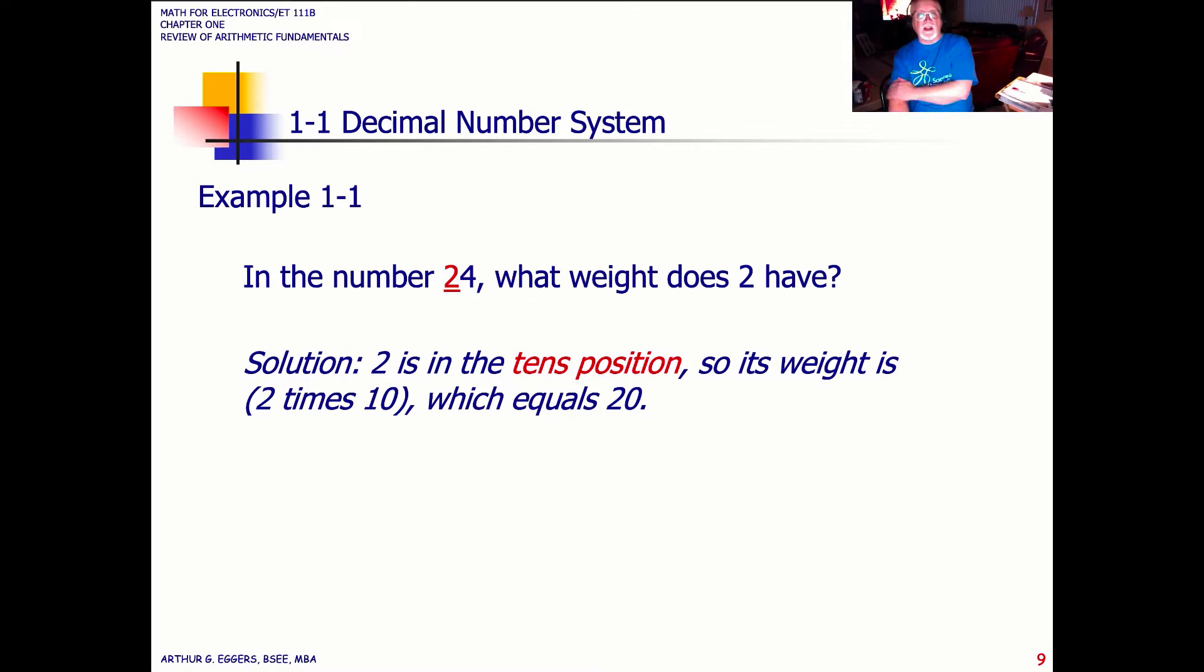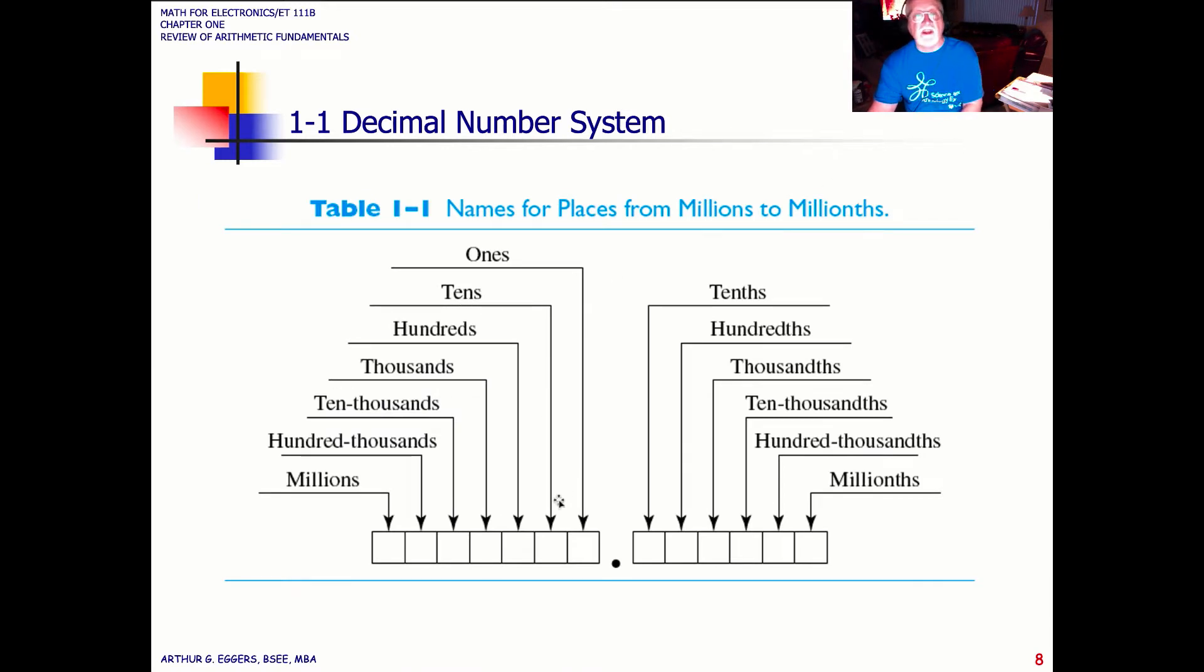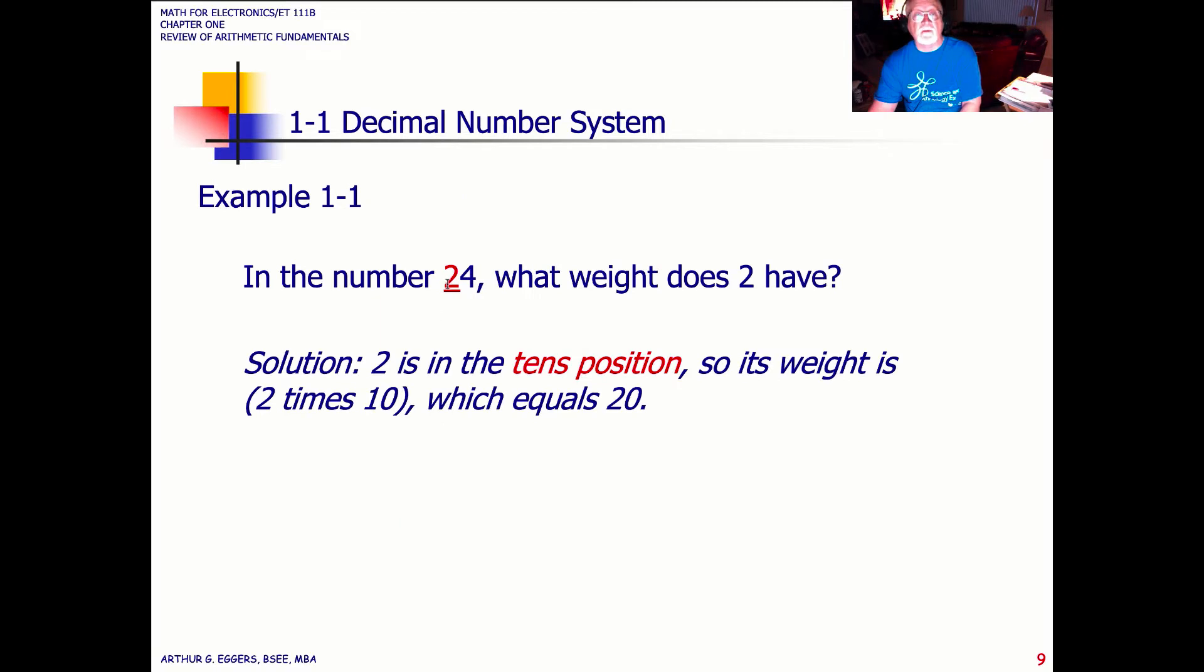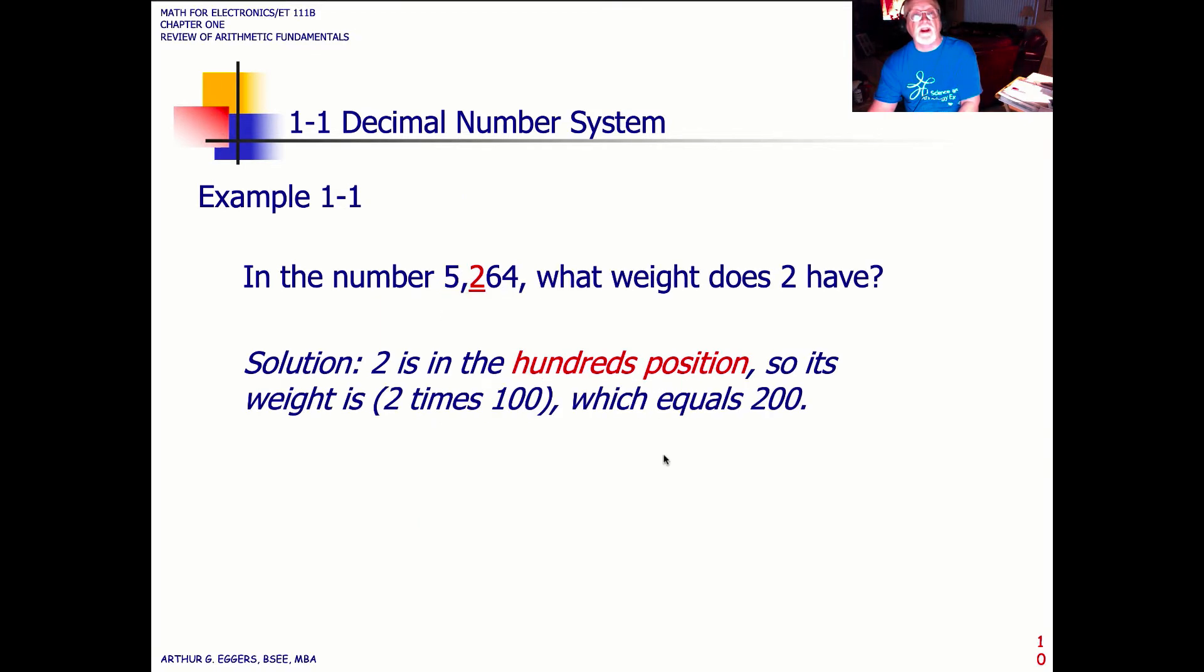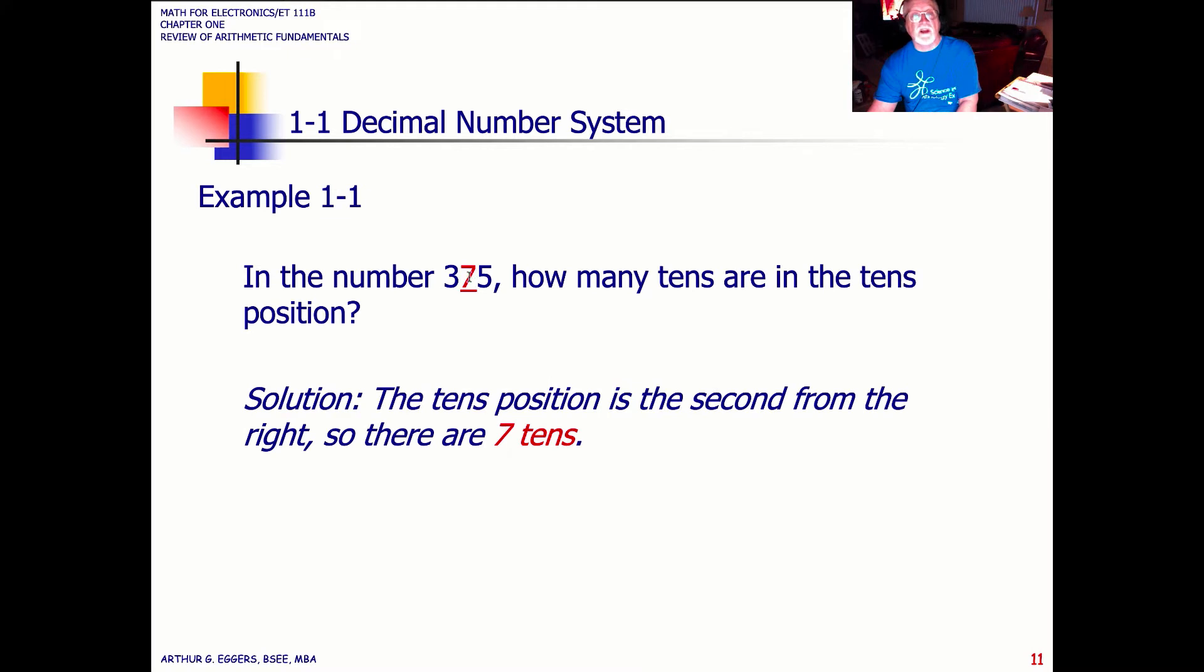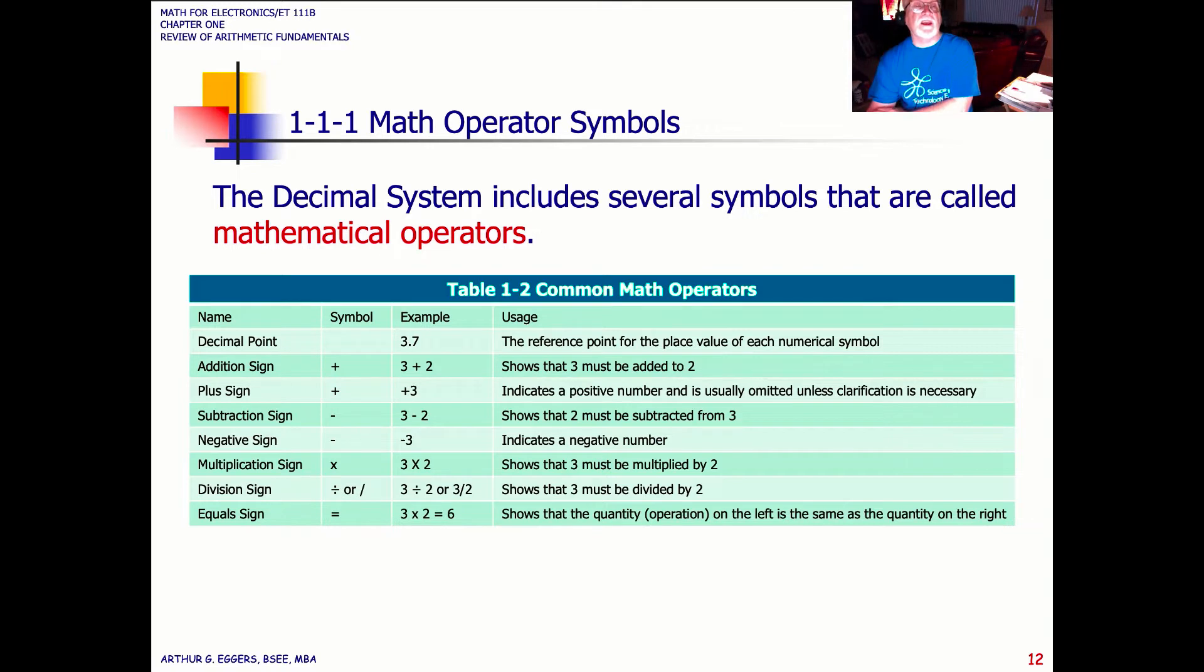This allows us to look at the weighted system. In this case, 24 is telling us that if we look at this section here, the chart tells us tens. We see that 2 is in the tens position, so that becomes two tens or 20. If we look at this number, 5,264, the 2 now is in the hundreds position. In this one, the 7 is in the tens position. It means that there are seven tens or 70 represented by that position. This table becomes handy.